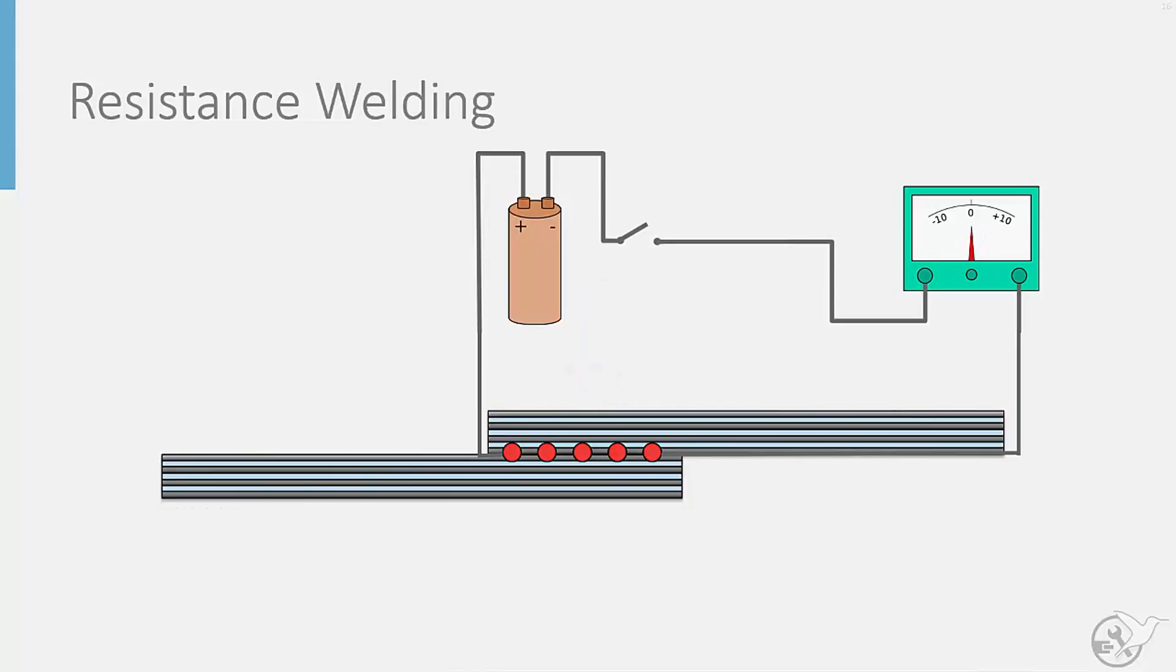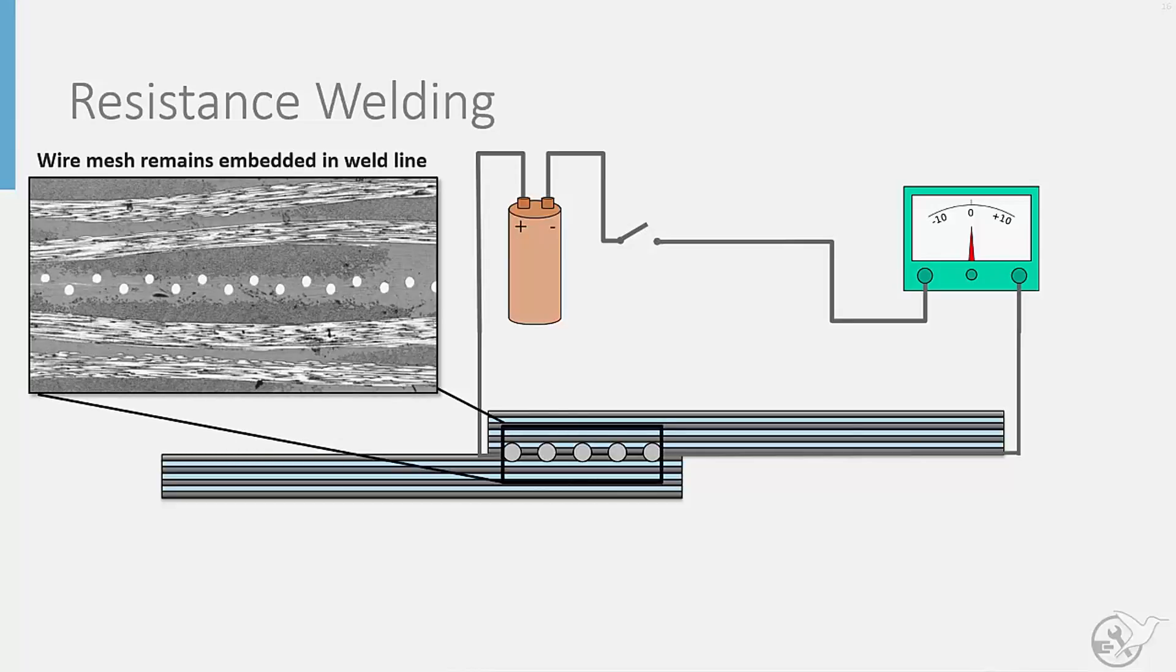The current is then removed, allowing the mesh to cool and the solidification of the weld to occur. If we look closely at the weld line after solidification, it is clear that the wire mesh used for heating becomes completely embedded within the structure after welding.